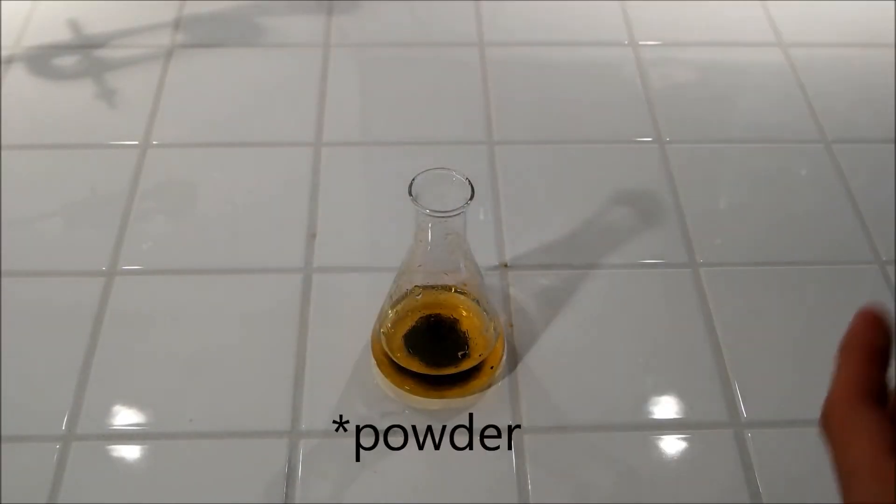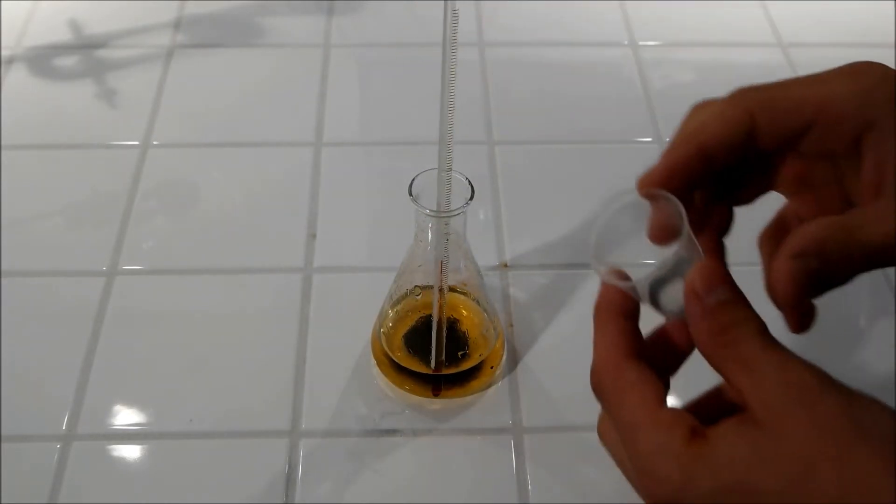Now add the zinc powder and put a thermometer in the Erlenmeyer flask.